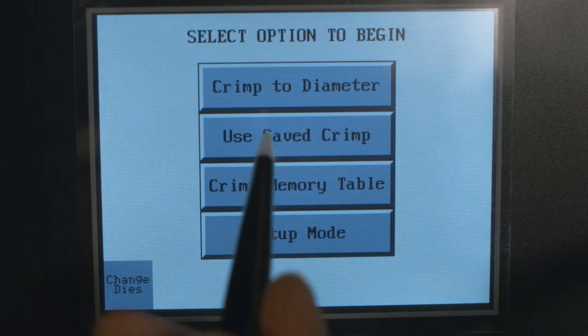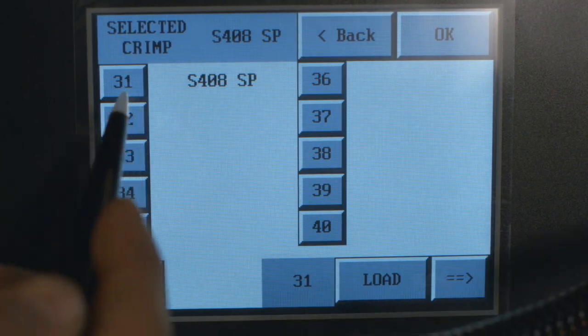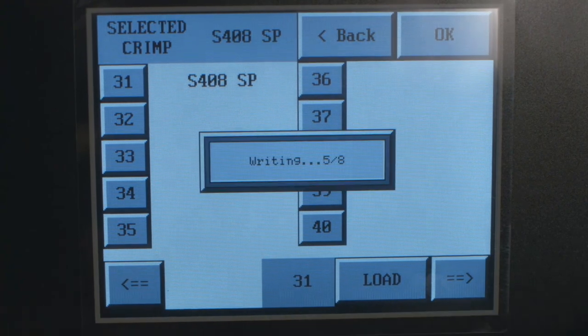You can now select Use Save Crimp to access and load your saved crimp presets, rather than selecting Crimp to Diameter to prepare a crimp.